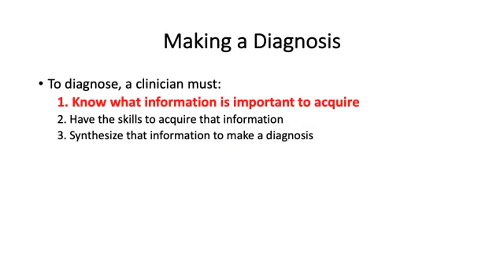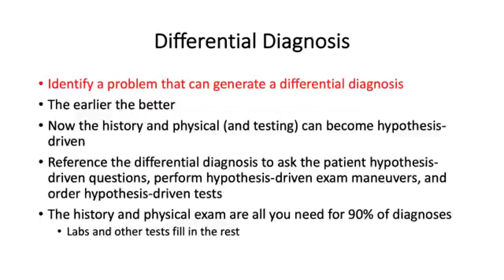To make a diagnosis, a clinician must know what information is important to acquire, have the skills to acquire that information, and then synthesize it. To know what information is important, creating a differential diagnosis is very helpful. I try to identify a problem — whether a symptom, physical finding, or laboratory abnormality — that I can generate a differential diagnosis around. The earlier you do this, the better, because now your interaction with the patient is going to be hypothesis-driven: hypothesis-driven historical questions, hypothesis-driven physical findings, and hypothesis-driven laboratory tests.